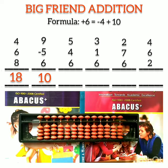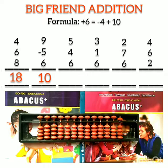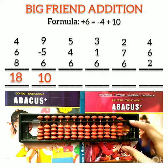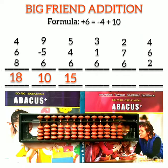Question number 3: 5 plus 4 plus 6. The first number is 5, the second number is 4. Now we have to add 6. As we can see, all the beads on one slot are in use. So here we apply the big friend formula of plus 6, that is minus 4 plus 10. Our answer is 10 plus 5, that is 15.